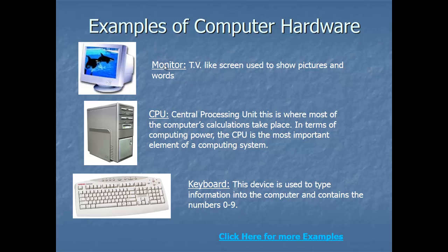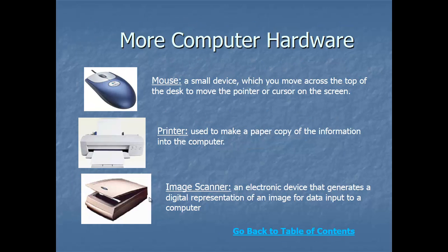The monitor is an output device — whatever the computer produces comes out through the monitor, just like words come out of our mouth. Our ears are input devices, and similarly the keyboard is an input device because we type instructions into the computer. The mouse is also an input device because we use it to give input signals. The printer is an output device.